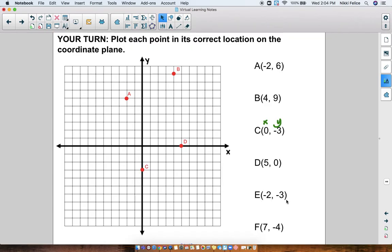Point E is at negative 2, negative 3. So we start at the origin, and we go 2 to the left, and then 3 down. There's point E.